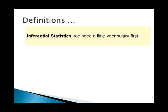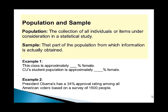Inferential statistics requires a little vocabulary before we can describe it in detail. We need to understand the difference between a population and a sample. A population in statistical terms is the collection of all the individuals or items that are under consideration in our study. For instance, if we heard that President Obama has a 34% approval rating among all American voters, then the collection of all American voters — probably registered voters — would comprise our population.